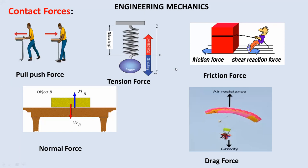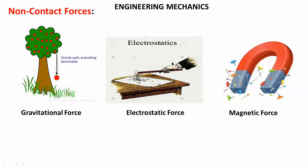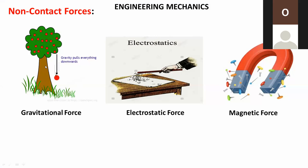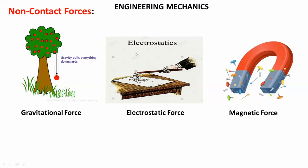Examples of non-contact forces: the first is gravitational force or gravitational pull — any object undergoes free fall because of gravitational acceleration, as seen with an apple falling due to gravity. The second is electrostatic force — if you rub an ebony stick on wool, it becomes positively charged and attracts paper particles, which is due to electrostatic force. The last example is magnetic force. Forces that exist without any physical contact are called non-contact forces.